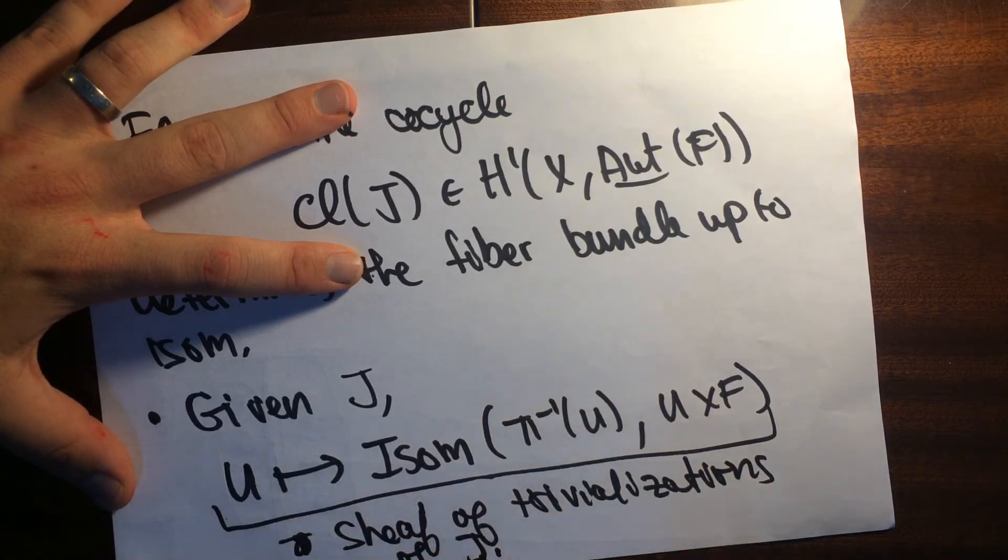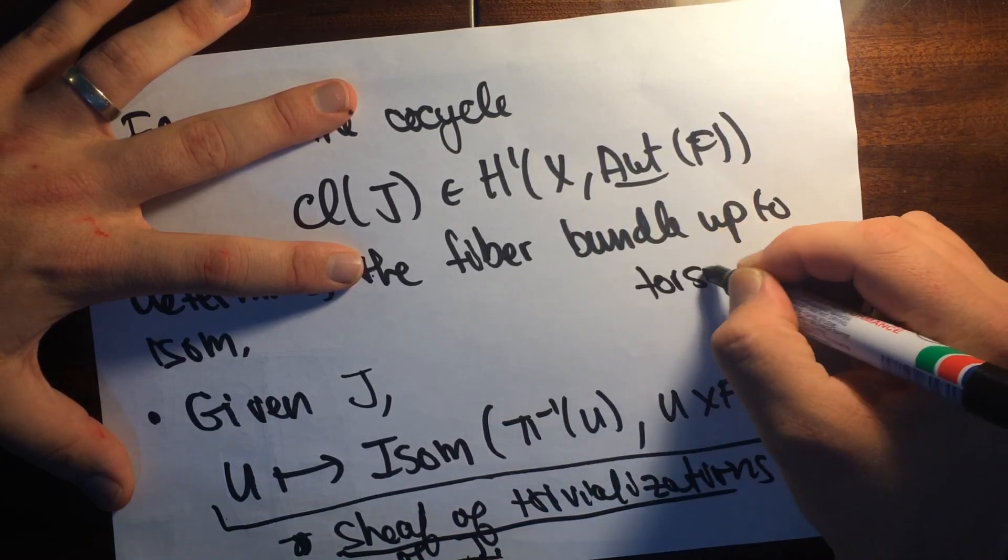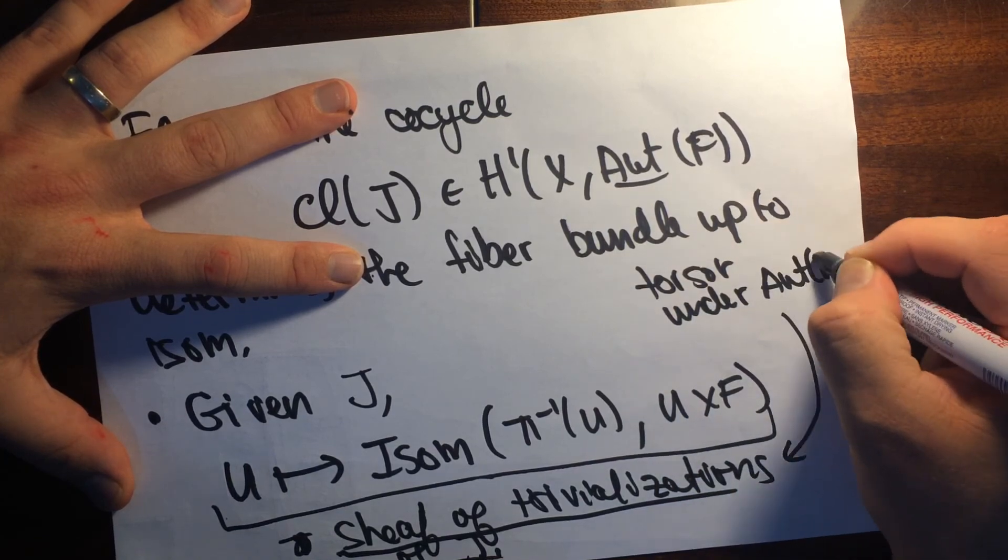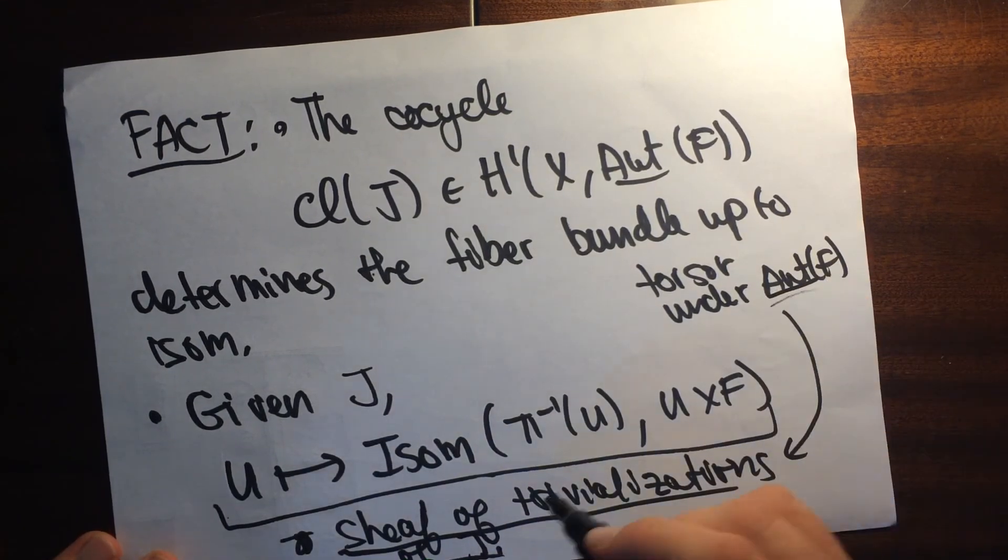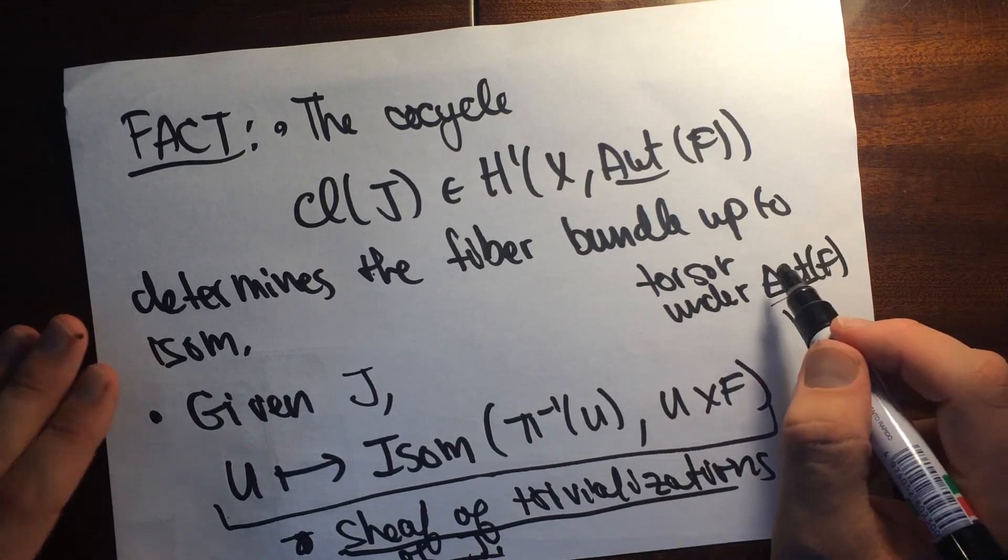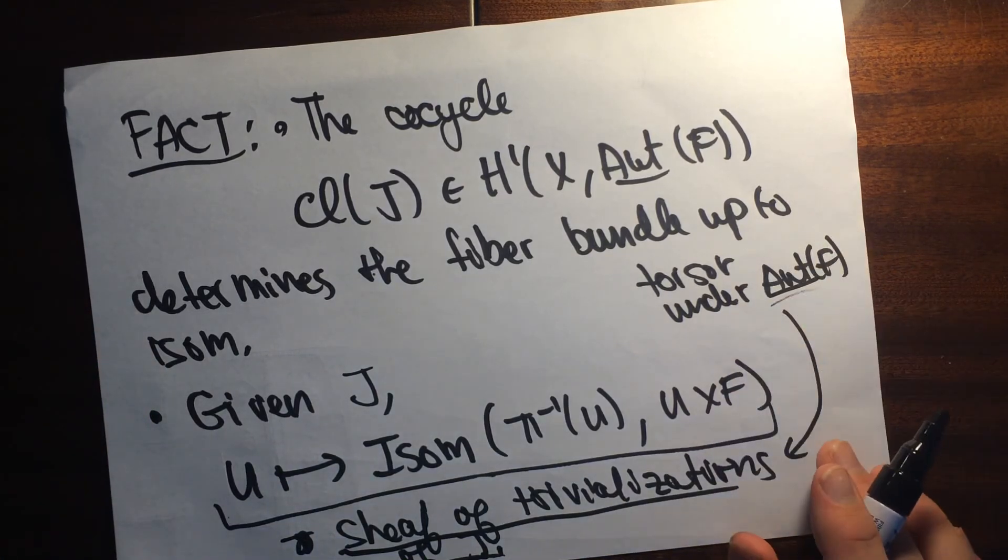So that's the definition. And so this thing is actually a torser under Aut(F). What this means is that we have this action of this thing on this thing by taking a trivialization, and then we can compose again with some automorphism to get a new one.